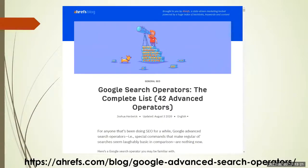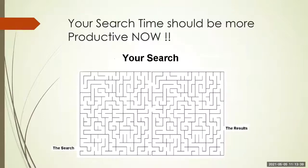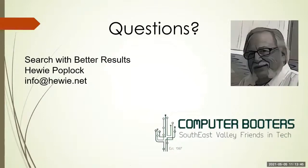I found a great resource while doing some updates — it's at the link at the bottom of the slide: 'Google Search Operators: A Complete List — 42 Advanced Operators.' You can go to that page and look at a lot of what I covered plus additional ones. Your search time now should be more productive. With that, I'm ready for some questions. Thank you.